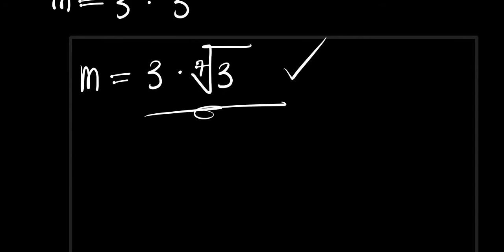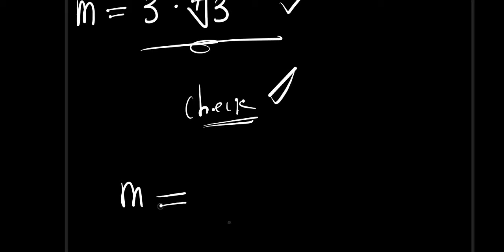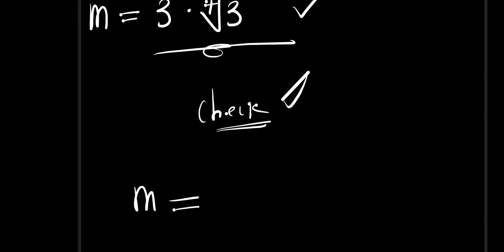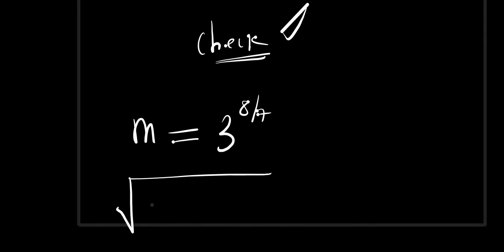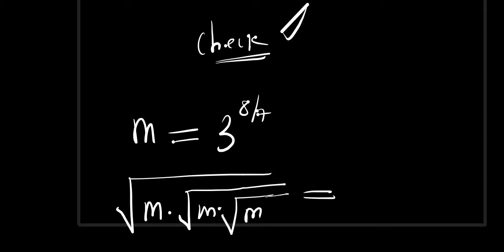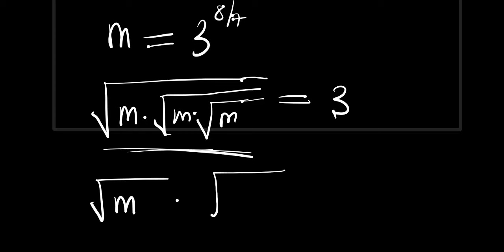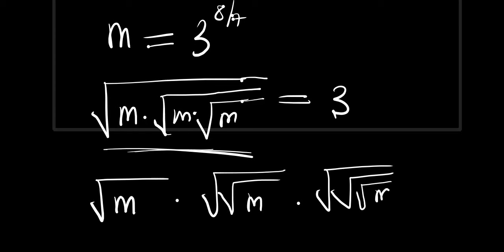Now we are going to check if the value of m we have gotten satisfies the original equation. We will use the form m equals 3 to the power 8 over 7. Substituting into the original expression — square root of m, times square root of m, times square root of m — we can rewrite the nested roots step by step, expanding each square root layer to get square root of m times square root of m, and this equals 3.